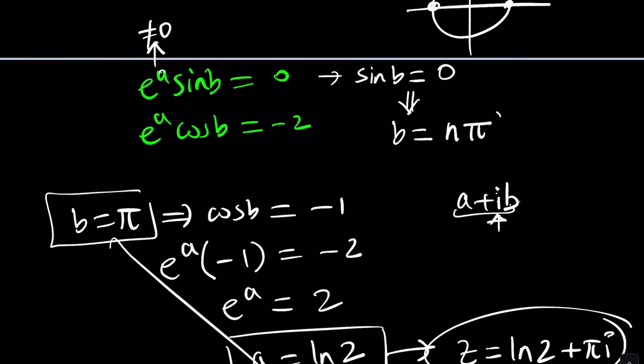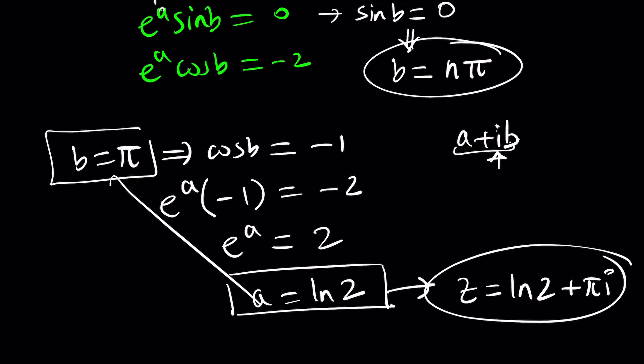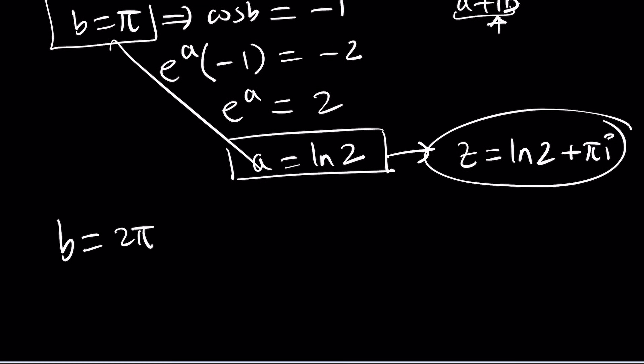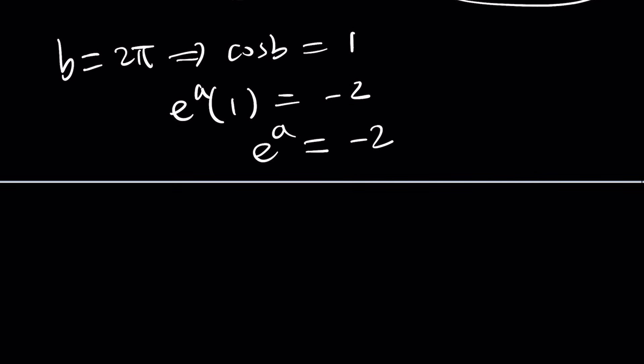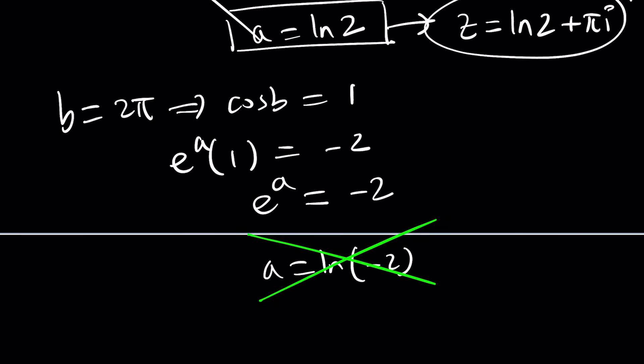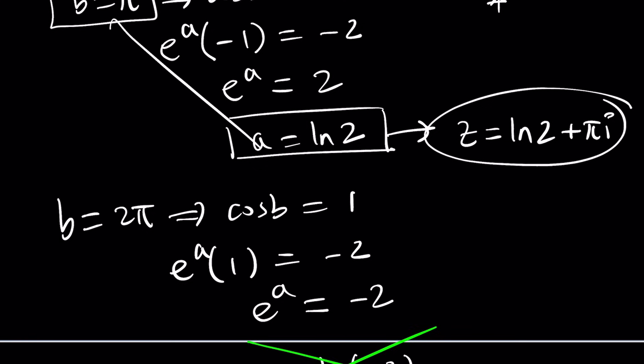So but anyways, that's one of the solutions. And what about the other possibility? If b is equal to n pi and n is 0 or 2 or 4, like even numbers, then b can be 2 pi. And in that case, cosine b would be positive 1. And then e to the power a times 1 equals negative 2 would give you e to the power a equals negative 2. But then from here, a would be ln of negative 2. Uh-oh. This is a real valued ln. So this is not acceptable, which means b cannot be 2 pi. It has to be an odd multiple of pi. Why? Because both equations have to be satisfied.